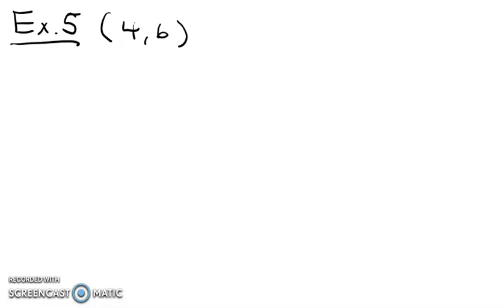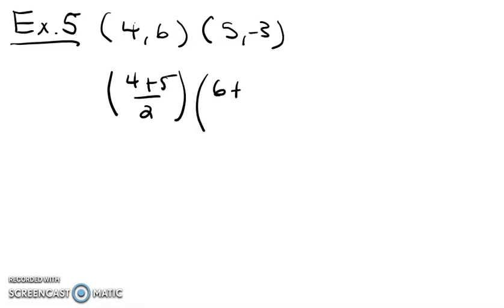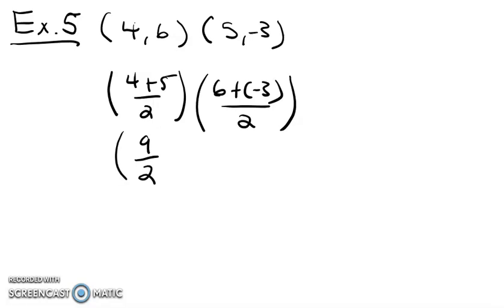For our last example, we're going to do something where we end up with a fraction. This is example 5. We want to find the midpoint between points (4, 6) and (5, -3). So to find our x coordinate, we're going to say 4 plus 5 over 2. And 6 plus negative 3 over 2 for our y coordinate. 4 plus 5 is 9, so we get 9 over 2. And 6 plus negative 3 is 3, so we get 3 over 2. So our midpoint is (9/2, 3/2).